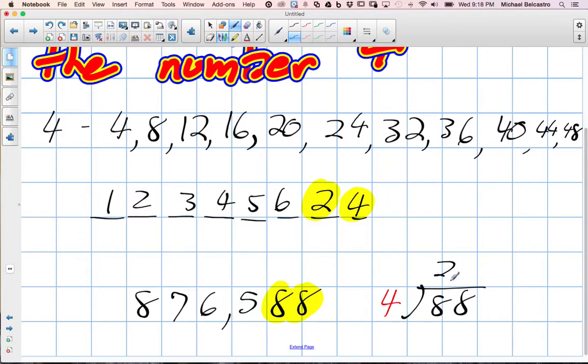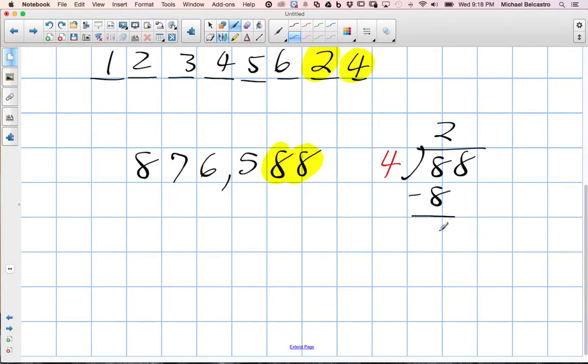4 goes into 8 two times, so 2 times 4 is 8. We subtract, get 0, we bring down the 8. 4 goes into 8 two times again. We subtract, no remainder. So 4 does go into this value because it does go into the last two digits.